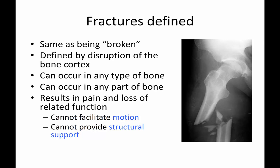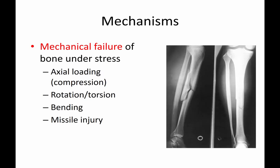Some other definitions. Patients often ask: is it fractured or is it broken? As far as medical terminology goes, it's the same thing — we use the terms interchangeably. A fracture is defined by a disruption of the bone cortex, and it can occur in any type of bone or any part of the bone. It results in pain, loss of related function, and inability to provide structural support — making it difficult to move, weight bear, load, or use the limb against gravity. The bone is also an insertion point for muscles, and that becomes mechanically unstable when fractured.